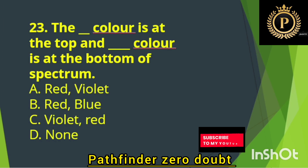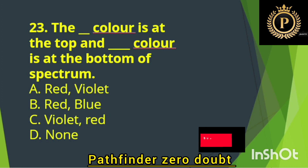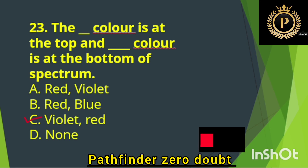The dash color is at the top and the dash color is at the bottom of the spectrum — Option C: Violet at the top and Red at the bottom.